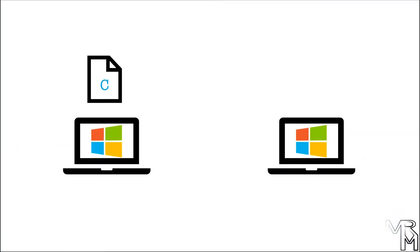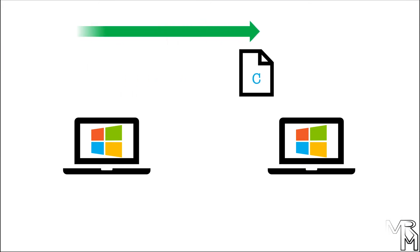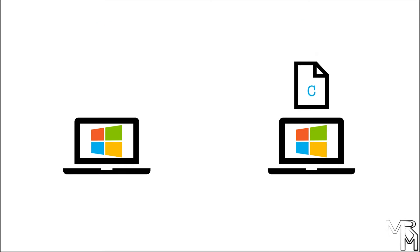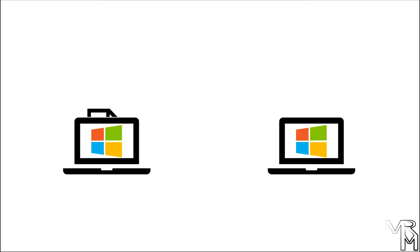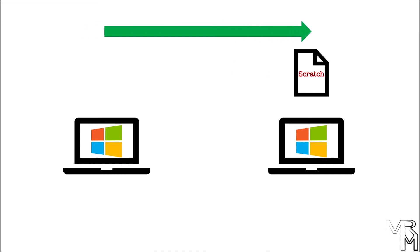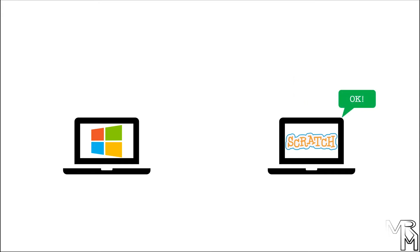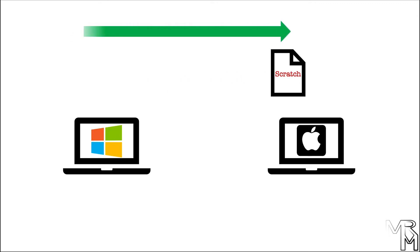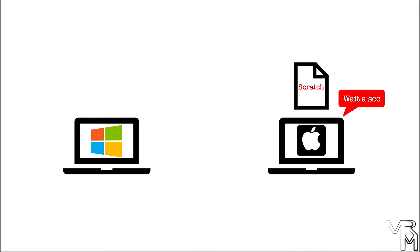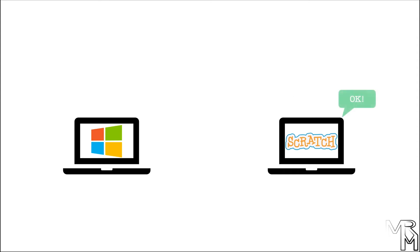In other words, if you write a program in a compiled language like C, compile it for Windows, and send it to your friend who also has a Windows computer, your friend will be able to run your program without any additional software. However, if you create a program in Scratch, save it, and send it to your friend, he or she will have to open your program in Scratch to run it, which might not be very convenient. On the other hand, Scratch is available for many platforms, so it doesn't matter what kind of system your friend has as long as he or she can open Scratch on that computer.